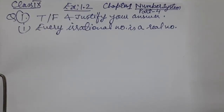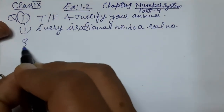So far we know what are numbers — irrational numbers, rational numbers, real numbers. Hum ko teen tarah ke numbers se malumat hogi: rational numbers, irrational numbers, and real numbers — which is a combination of both rational and irrational numbers. So see the solution.